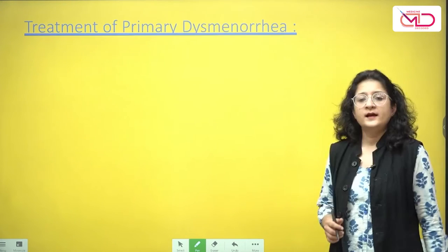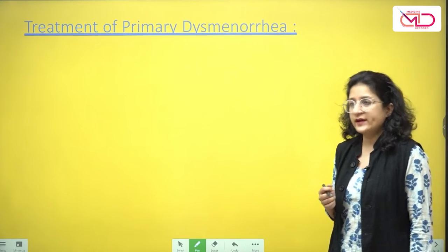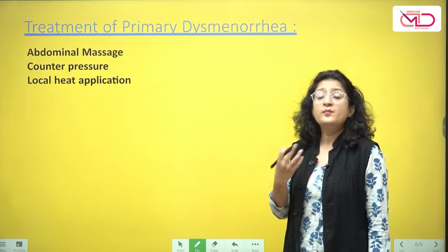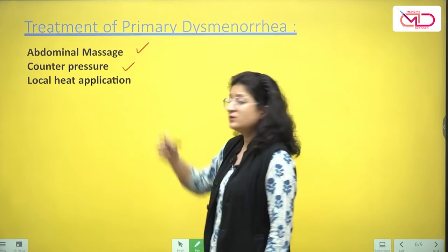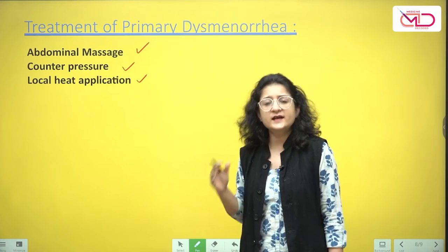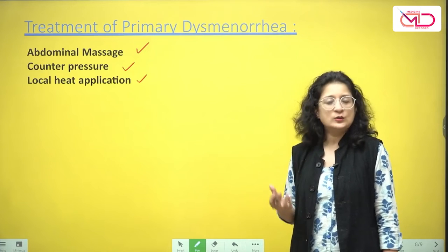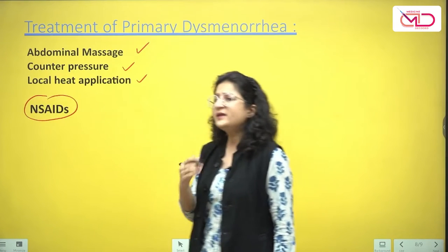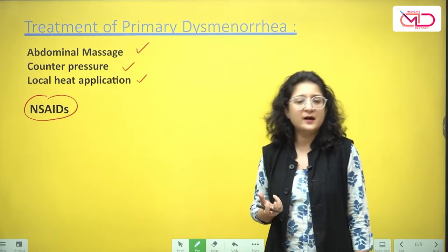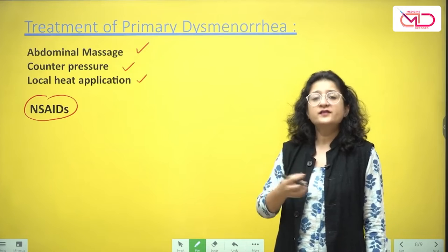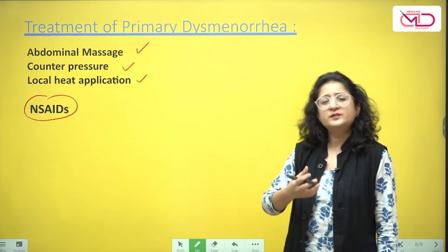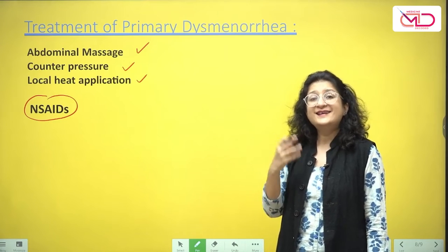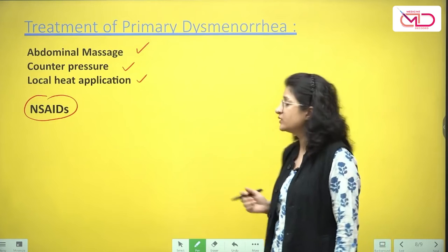Treatment of primary dysmenorrhea begins with conservative measures: abdominal massage, counter pressure, and local heat application. If these are not helpful, drug treatment is prescribed. NSAIDs with antispasmodic properties, such as mefenamic acid, are commonly prescribed during the first few days of the cycle when pain is present, dosed four to six hourly. NSAIDs work by decreasing the release and synthesis of prostaglandins.